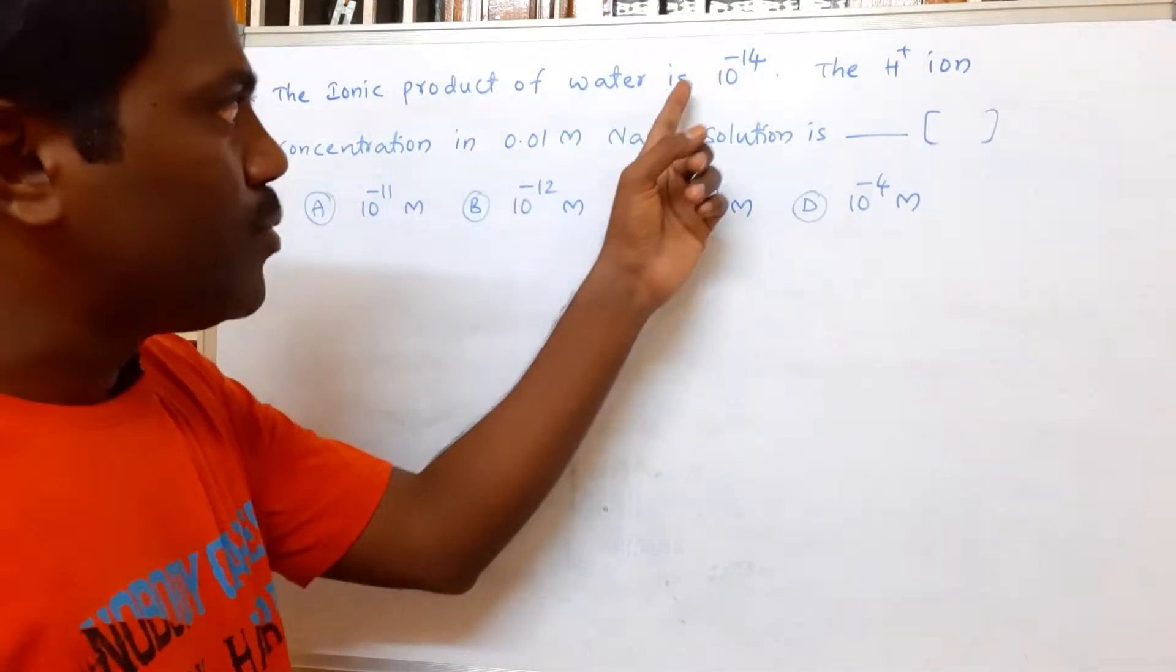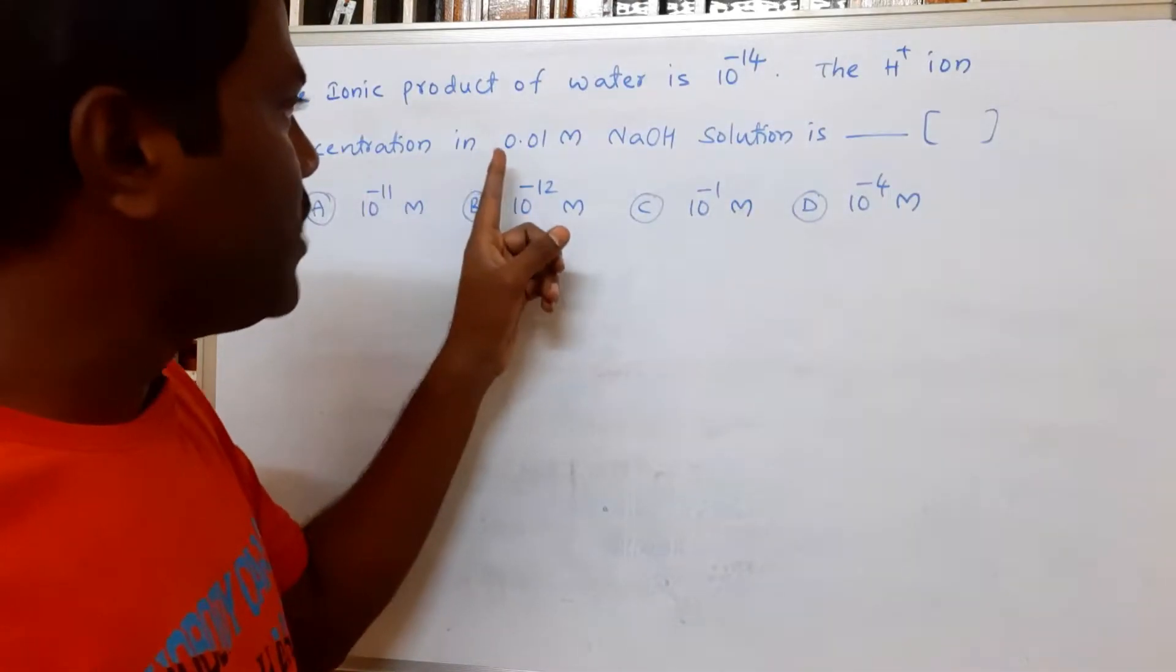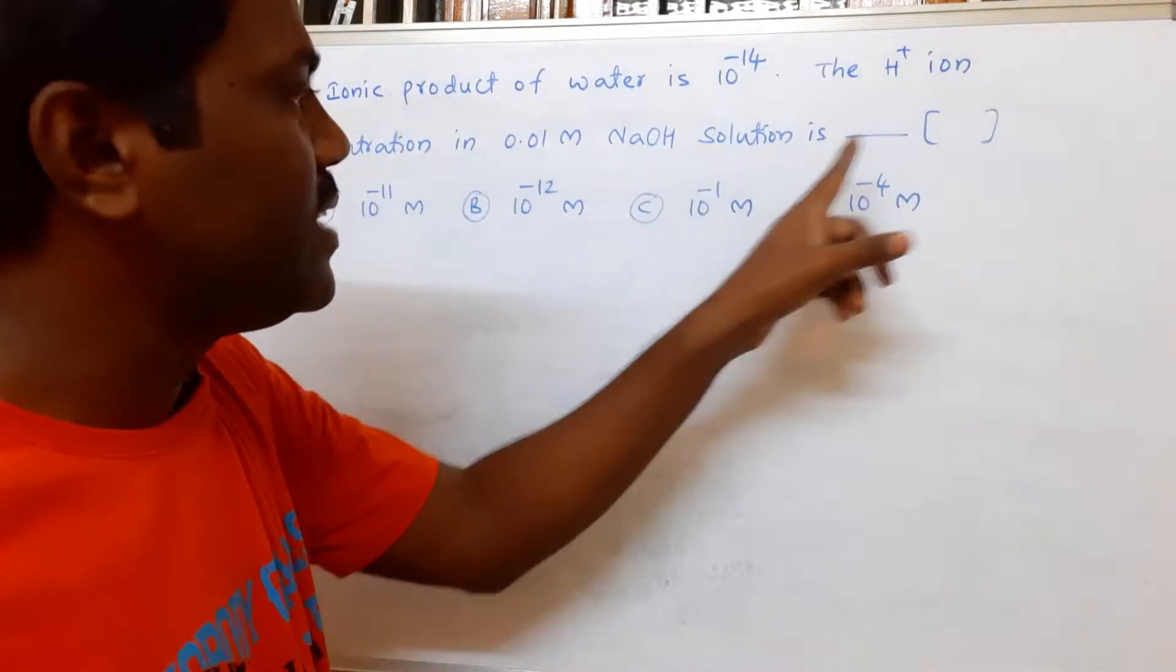The ionic product of water is 10^-14. The H+ ion concentration in 0.01 molar NaOH solution is what?